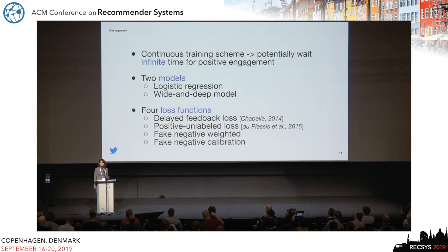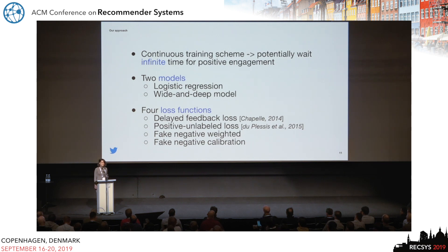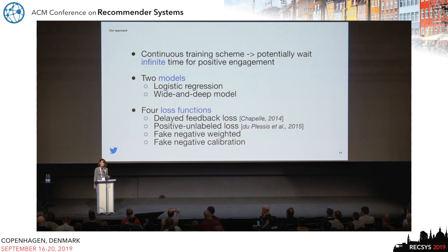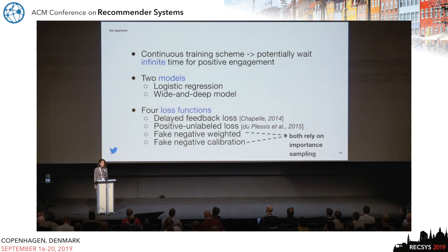We employ a continuous training scheme, which potentially allows us to wait an infinite amount of time until we observe a positive engagement or a click. We compare two different models offline: a simpler logistic regression model, which is very commonly used in display advertising, and a wide and deep model. For both of these models, we compare four different loss functions: one based on the delayed feedback model introduced by Chappelle, one based on positive and unlabeled learning proposed by Duplessis et al., and two approaches that rely on importance sampling — positive-negative weight loss and positive-negative fake-negative calibration.